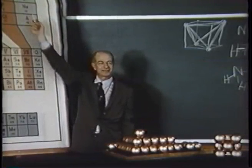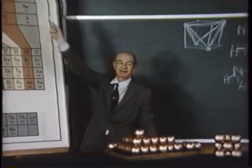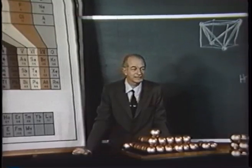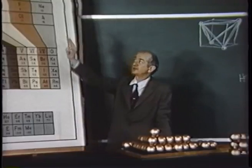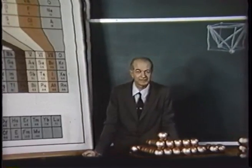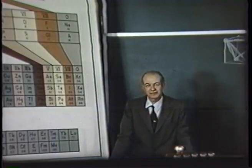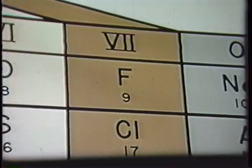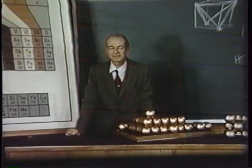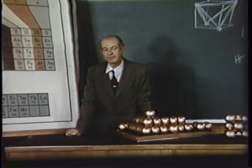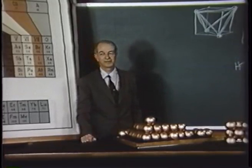Neon here has ten electrons surrounding a nucleus with charge plus ten. The electronic structures characteristic of two electrons as in helium, and ten electrons as in neon, are especially stable. This is the reason that helium and neon do not form chemical compounds of the ordinary sort. The third electron on lithium is held only loosely by the atom — it is easy to pull that electron away. Moreover, fluorine with nine electrons has a considerable affinity for an additional electron. The result is that if lithium metal and fluorine gas come together, there is a vigorous chemical reaction that leads to the formation of the salt, lithium fluoride.